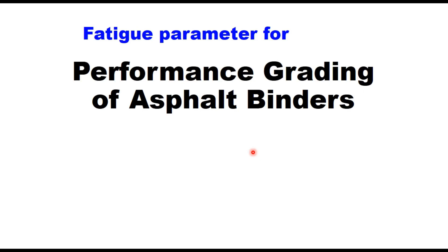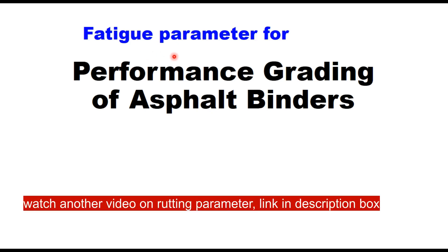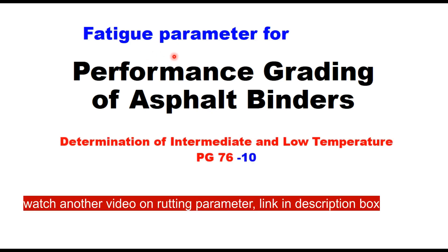Hello friends. Today in this session we will discuss the fatigue parameter for performance grading of asphalt binders, also called G* sine delta. This is used to determine the lower temperature of a PG grade system — for example, minus 10 in the case of PG 76-10 — and how to determine this lowest temperature.